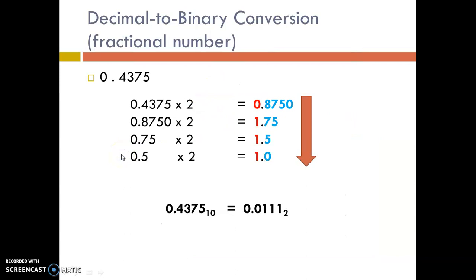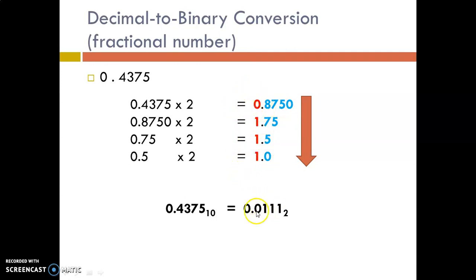Now we have to convert the fractional part. Converting the fractional part is accomplished by successive multiplication method, repeatedly multiplying the fraction by the radix. Radix is 2, so we are multiplying it with 2. So 0.475 multiplied by 2 gives 0.870. The integer part will become the numeral in the new radix.